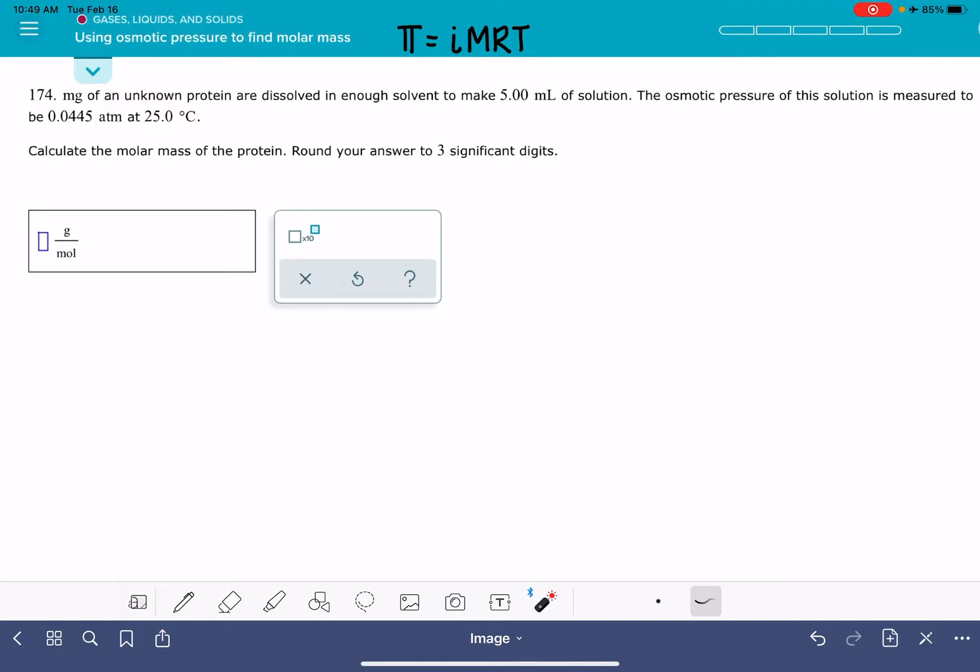We have a small amount of an unknown protein dissolved in solvent, so the protein is our solute. Because it's telling us we have a protein, it's not giving us a molecular formula to look at. Whenever we're being given just a name of a solute, not a molecular formula, we can always make the assumption that i = 1, that it's a non-electrolyte. If this was an electrolyte, they would have to give us the molecular formula so that we could see how many cations and anions we had to calculate i.